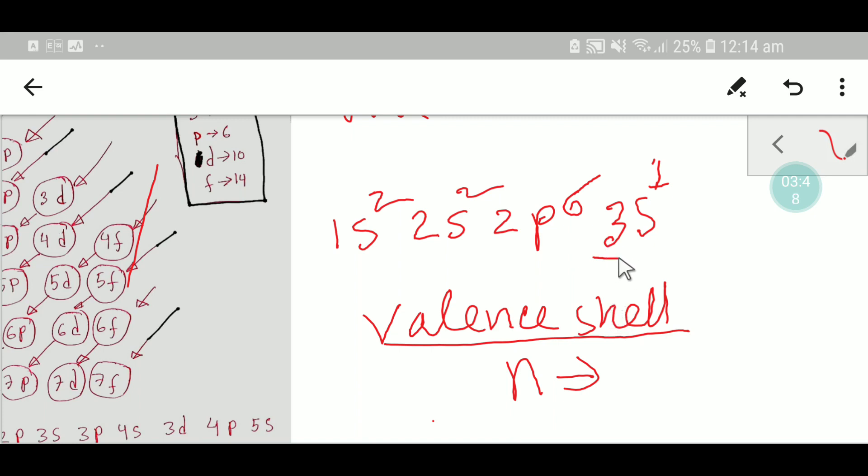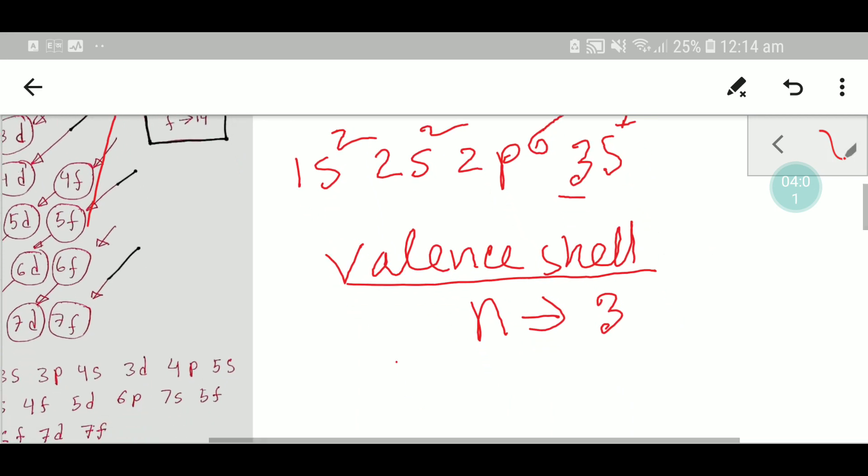The maximum value of the principal quantum number is 3. So 3s¹ is the valency shell. The electrons in the valency shell are called valence electrons.